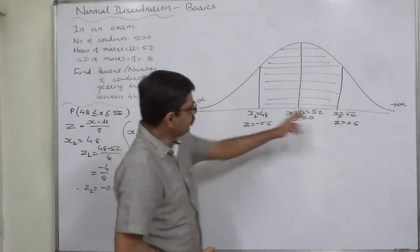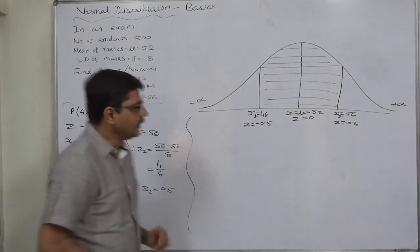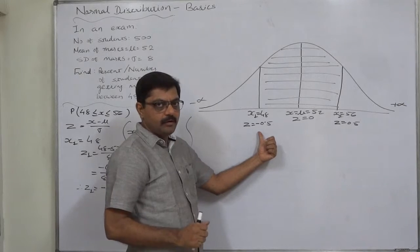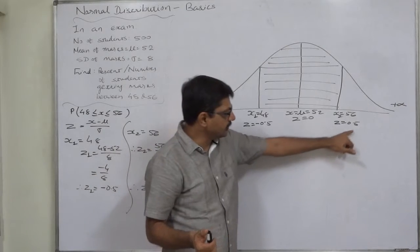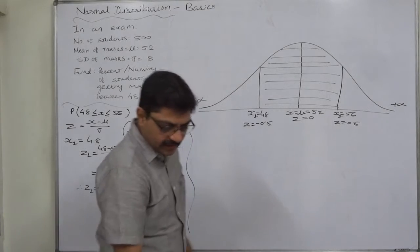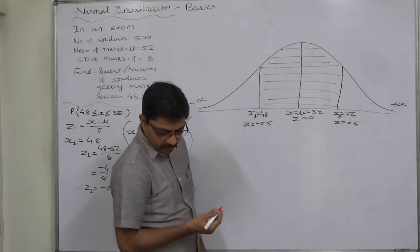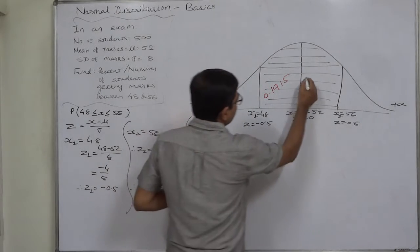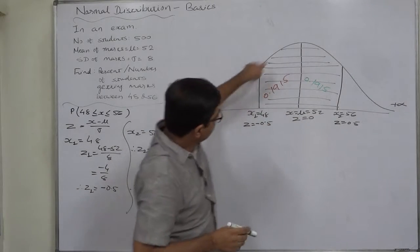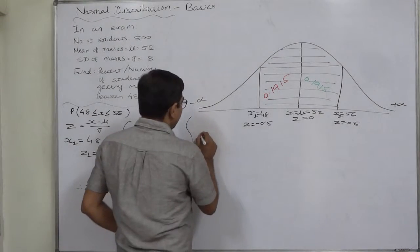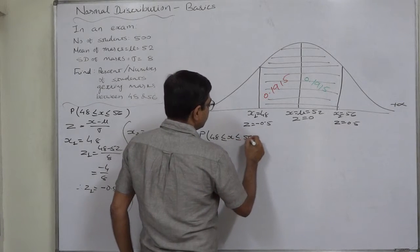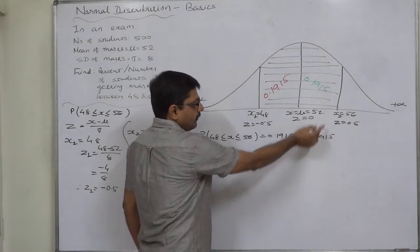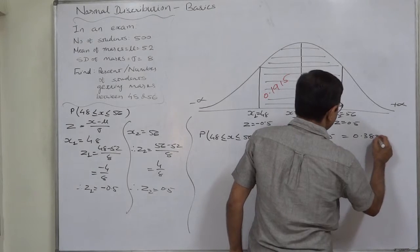If X falls within these two limits, it lies between 48 and 56. Both areas can be directly found from the readily available Z-tables. The area between Z = 0 and Z = −0.5 equals the area between Z = 0 and Z = +0.5, since area has no relationship with sign. From the table, the area is 0.1915 on each side. Summing both: 0.1915 + 0.1915 = 0.3830. So P(48 ≤ X ≤ 56) = 0.3830.